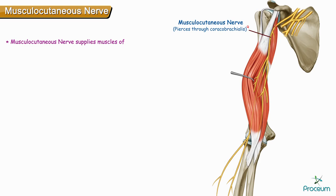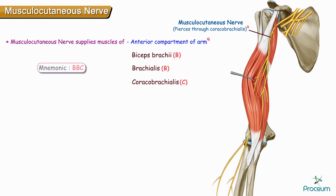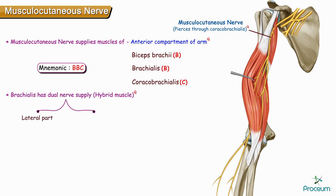Musculocutaneous nerve supplies the muscles of the anterior compartment of the arm: biceps brachii, brachialis, and coracobrachialis. Brachialis actually has a dual nerve supply — the lateral part is supplied by the radial nerve and the medial part by the musculocutaneous nerve.